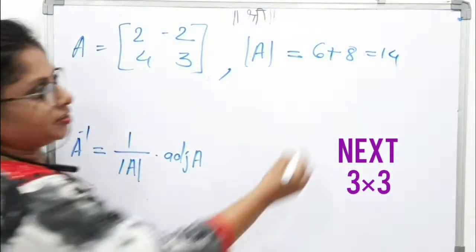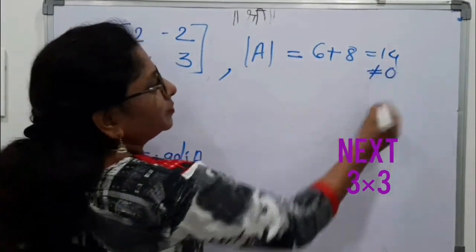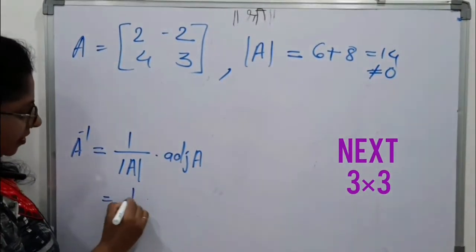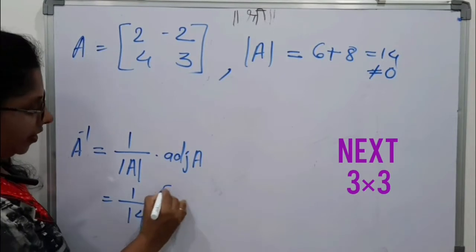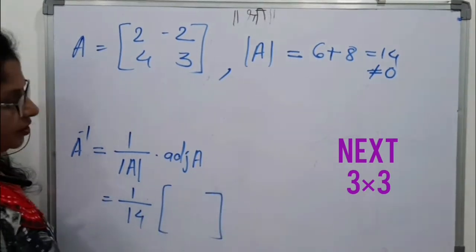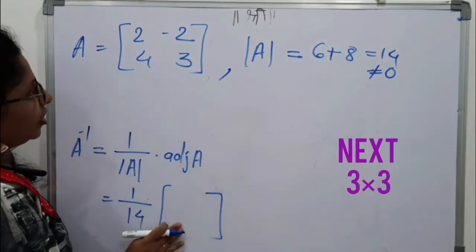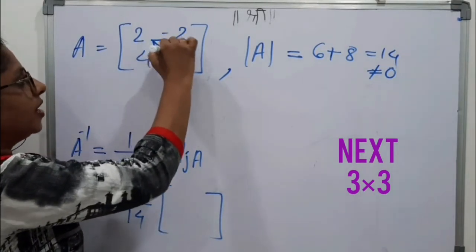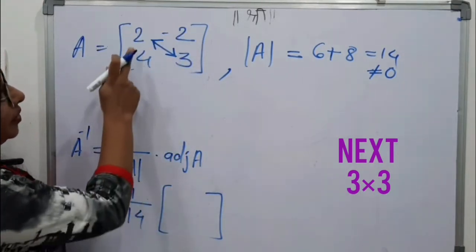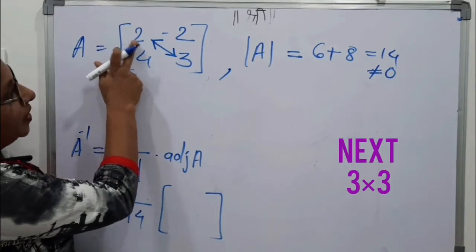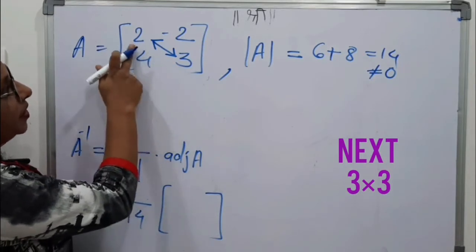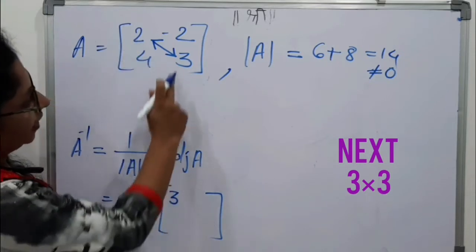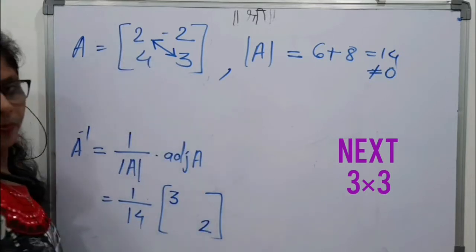Which is non-zero means non-singular. Now write down 1 upon 14 into adjoin of this. Now for adjoin you just interchange these two diagonal elements. Means 2 at the place of 3 and 3 at the place of 2. Means here 3 and here 2. Simply.